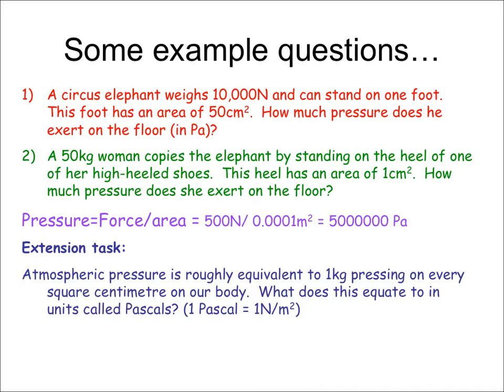Here are some example questions — the famous one of the elephant standing on one leg: how much pressure does that exert? And a small lady of 50 kilograms standing on one heel of a stiletto shoe. What happens is that there's a huge amount more pressure from the stiletto heel because the area is so much smaller. You can work through the calculation yourself.